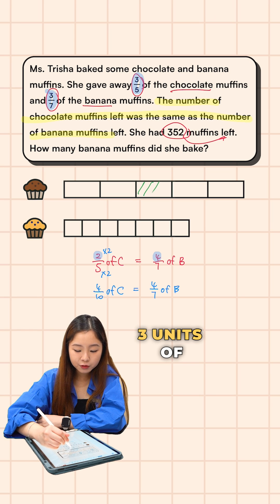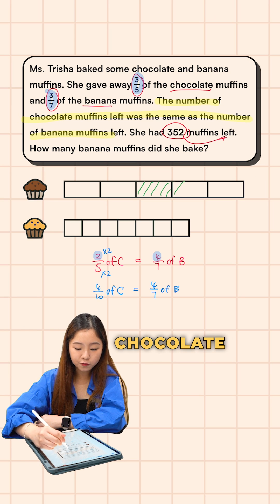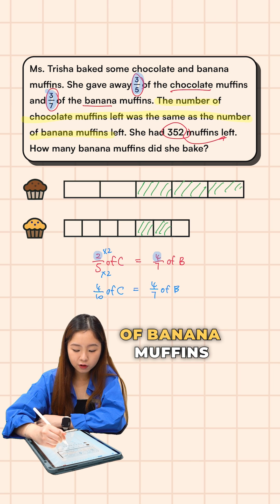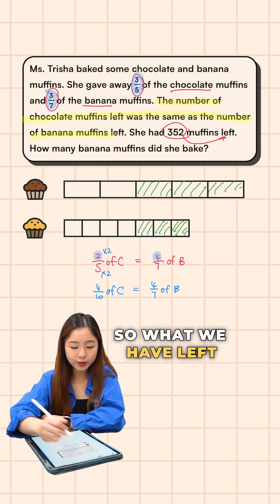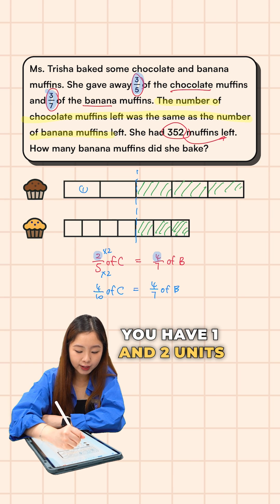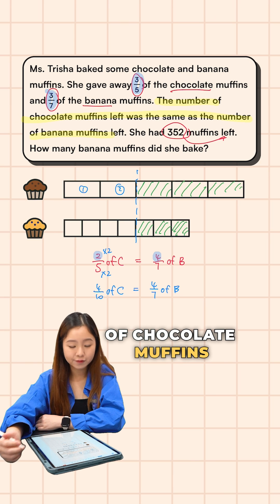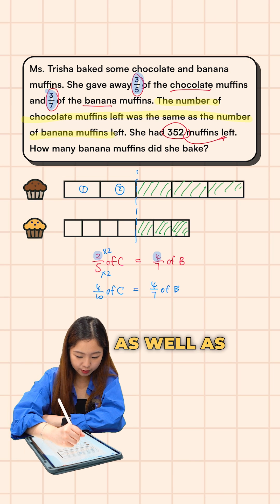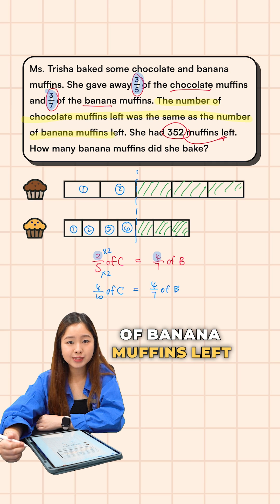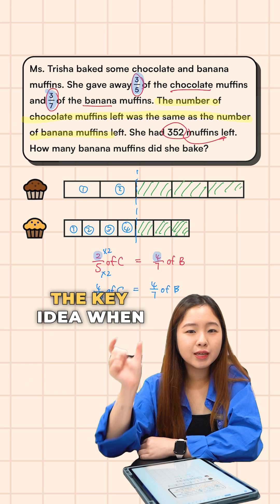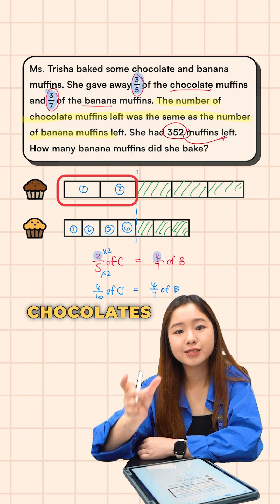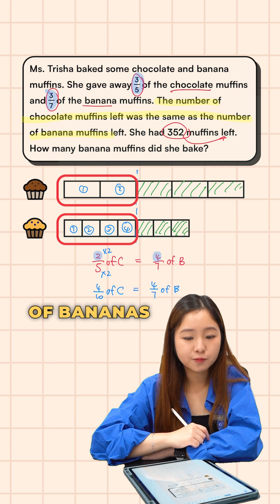If you relate this to the model above, you can see clearly that three units of chocolates and three units of banana muffins were given away. What we have left would be one and two units of chocolate muffins, as well as one, two, three, four units of banana muffins left. The key idea when drawing the model is that two units of chocolates have to be equal to four units of bananas.